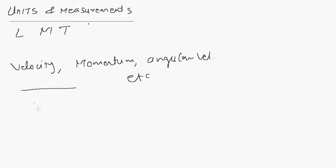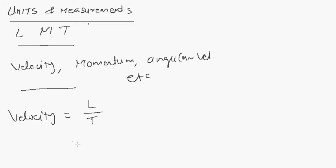Any of these derived quantities can be reduced to a combination of the fundamental units of length, mass, and time. For example, velocity is the distance traveled — that is, length — over time. Therefore, length is measured in meters and time in seconds, which can be written as meters times second to the power minus one, or m·s⁻¹.